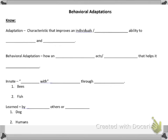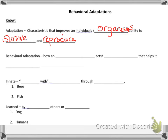The first vocabulary word is adaptation — it's characteristics that improve an individual or organism's ability to survive and reproduce. We're going to talk about behavioral adaptations throughout this whole fun sheet.